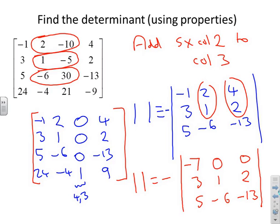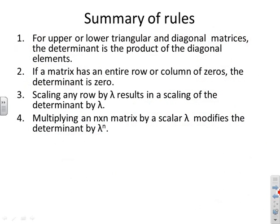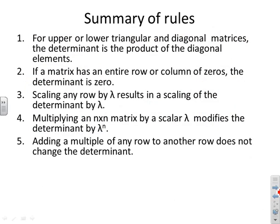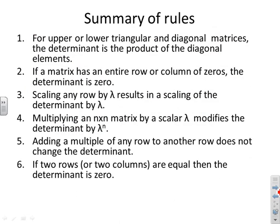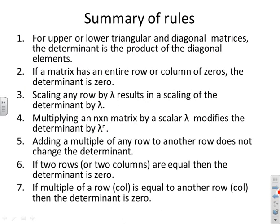In summary, the new rules added in this video are: adding a multiple of any row to another row does not change the determinant; if two rows or columns are equal the determinant is zero; and therefore if a row or column is a multiple of another, the determinant is also zero. We can exploit these rules to simplify determinant calculations significantly.